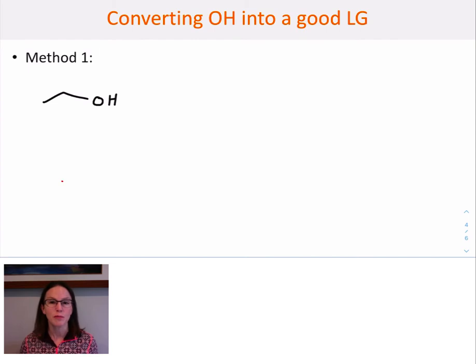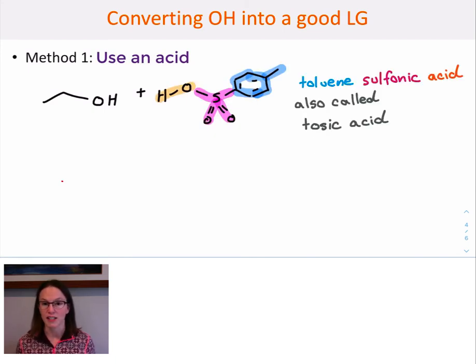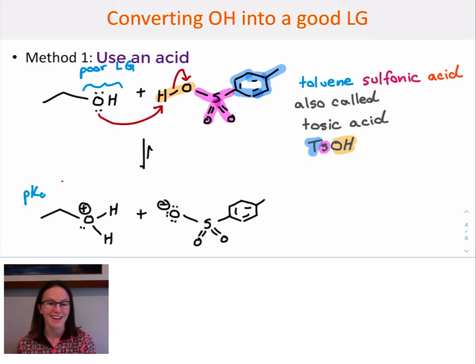So let's look at the two main ways that we can use to convert the hydroxyl group into a better leaving group. Method one is to use an acid. So we might use an acid such as tosic acid, very common in organic chemistry because it dissolves in organic solvents, but it's equivalent to something like HCl or sulfuric acid. And so by protonating that hydroxyl group, shifting that equilibrium over to the protonated side, now the leaving group in the SN2 reaction is water.